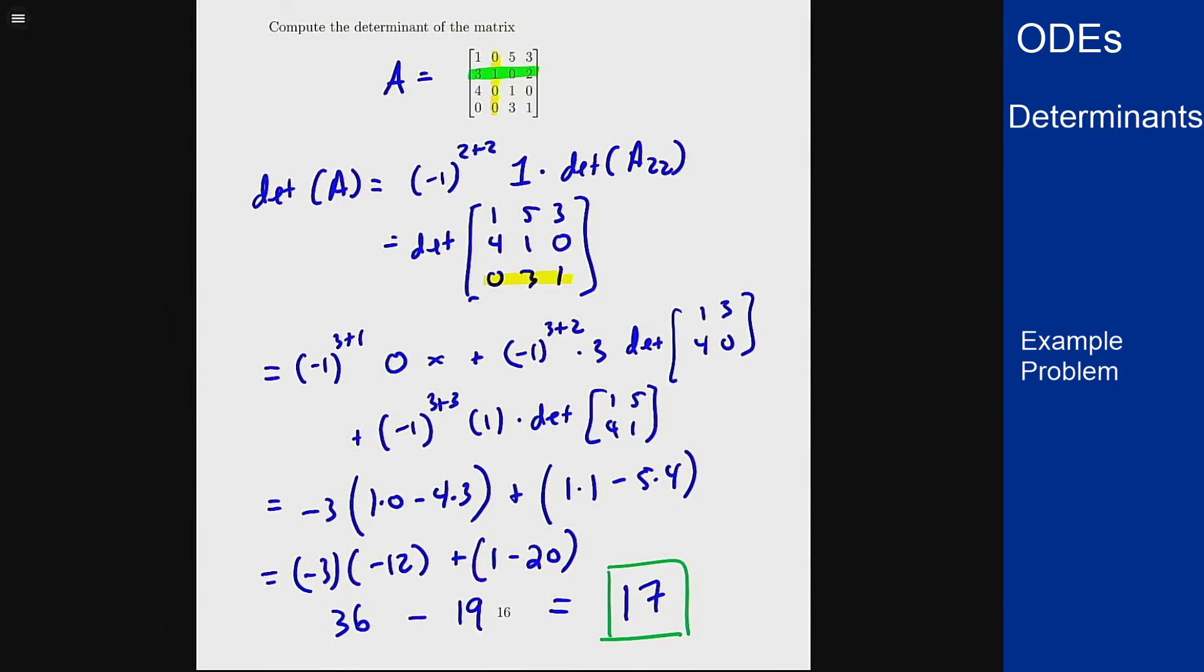So there's an example of the process of using cofactor expansion to solve for the determinant of a larger matrix by choosing the appropriate row or column to expand upon, and then using this reductive process to figure out what the determinant is.